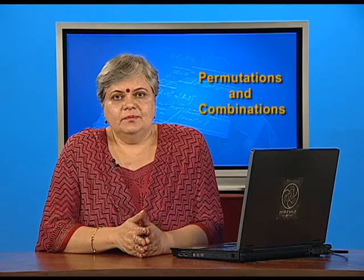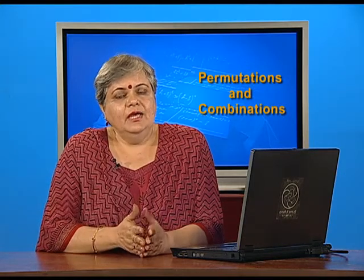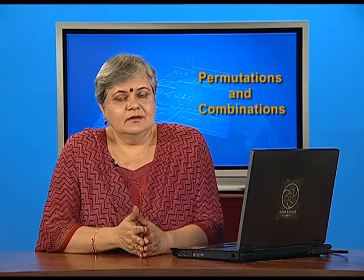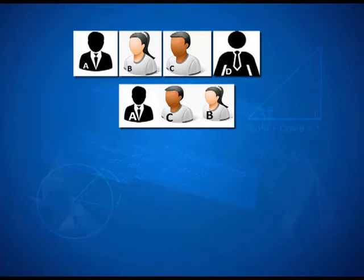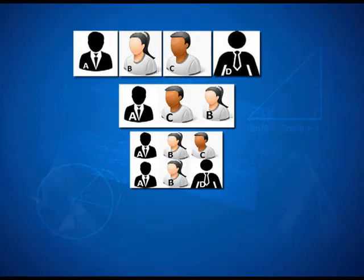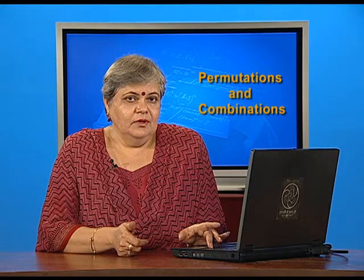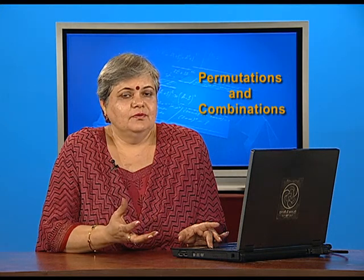Starting with a simple example: suppose I have 4 people available, out of which 3 have to be selected for a certain committee. In how many ways can I make such a selection? I have persons A, B, C and D. I may select A, B and C, or A, B and D, or A, C and D, or B, C and D. If I select C, A and B for that committee, is it any different from a committee comprising A, B and C? No - and that is what the word combination means.